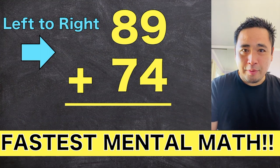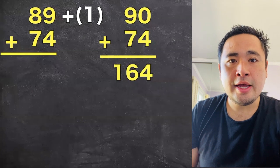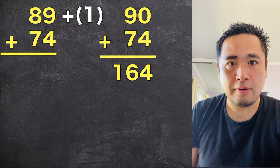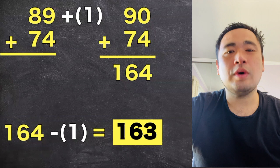Let me show you exactly what I mean. So in this problem, we're going to add 1 to the 89 to make it 90 and add that to the 74 mentally to get 164. And don't forget to subtract the 1 back to get a final answer of 163.